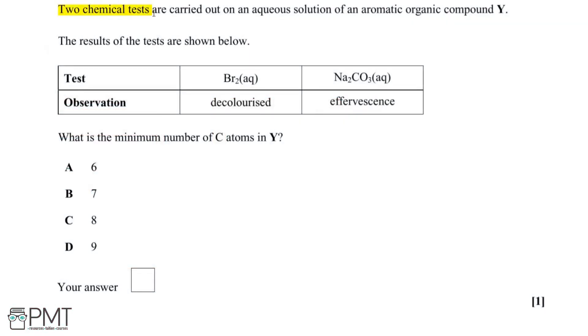In this question, two chemical tests are carried out on an aqueous solution of an aromatic organic compound Y. We want to use the results of these tests to identify the minimum number of carbon atoms on the aromatic compound Y.